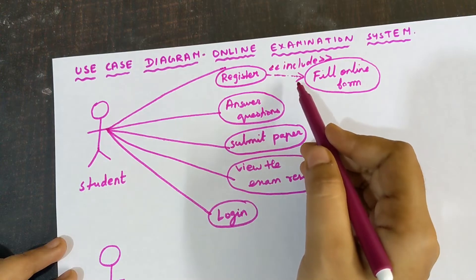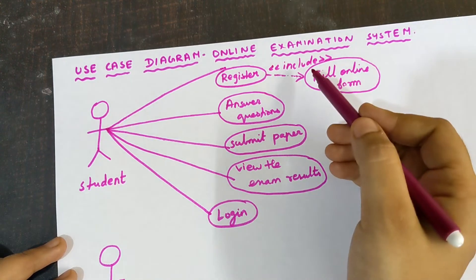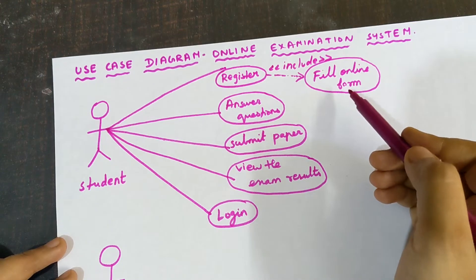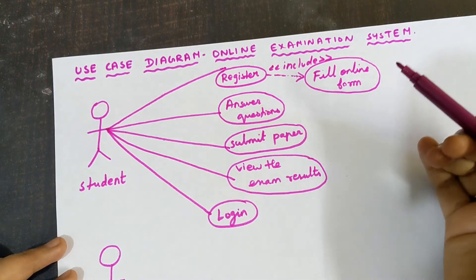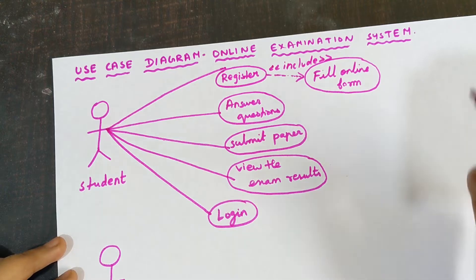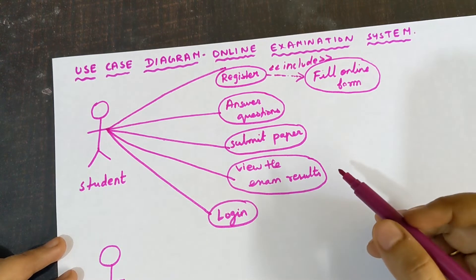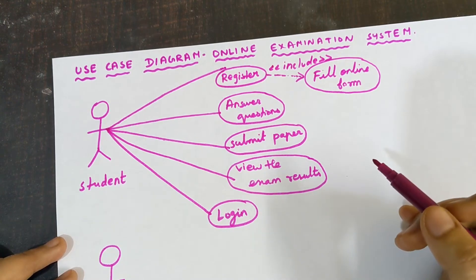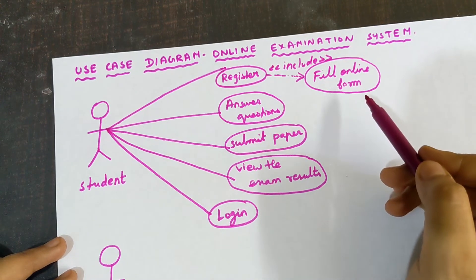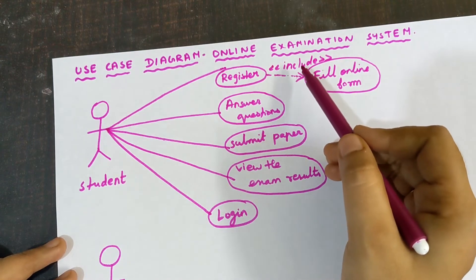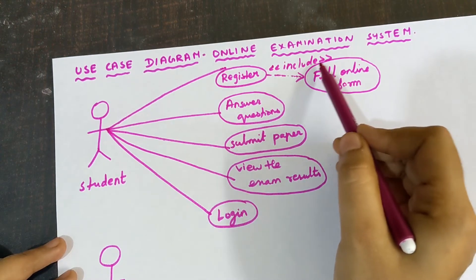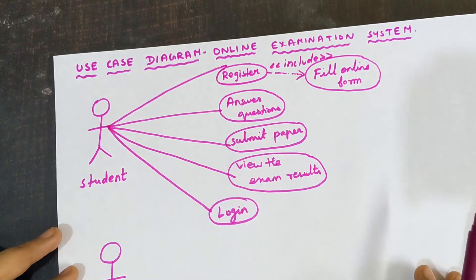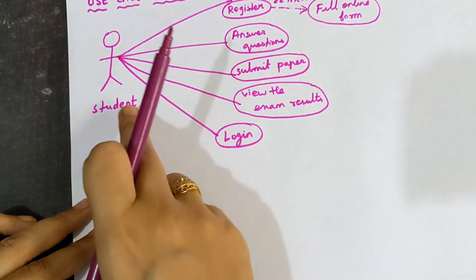There are two types of stereotypes in use case diagrams: include and extend. Include means mandatory — that step must happen. Extend means it is not compulsory; it is optional. For example, filling a feedback form is optional — if you want to fill it you can, if not you need not. So extend is used for optional actions, while include is used for mandatory ones like filling the online form.